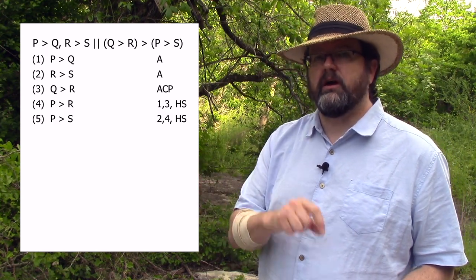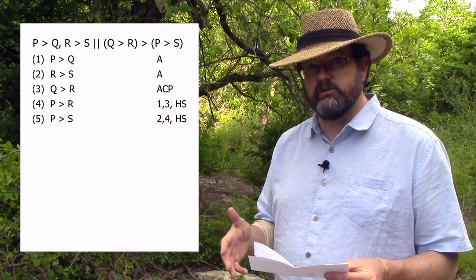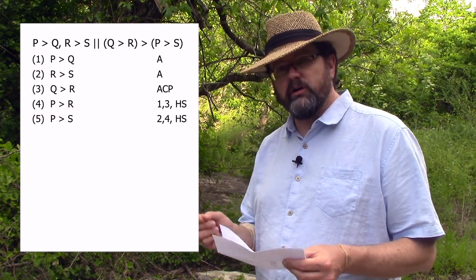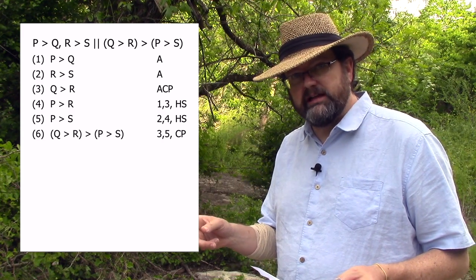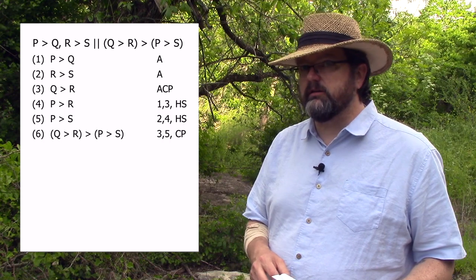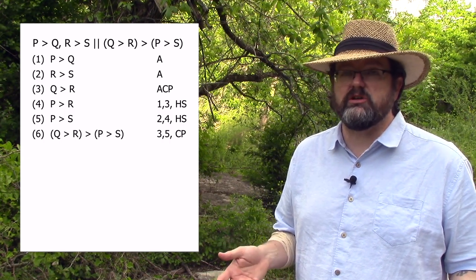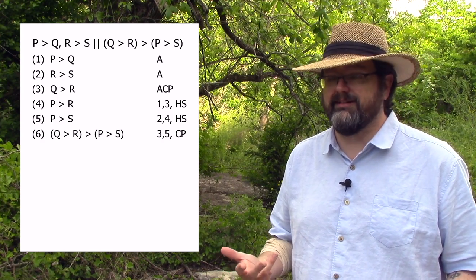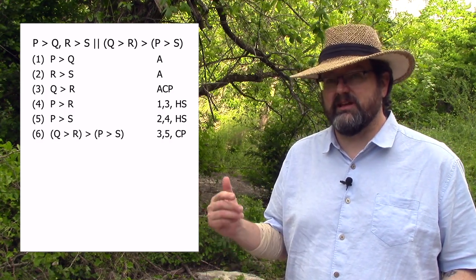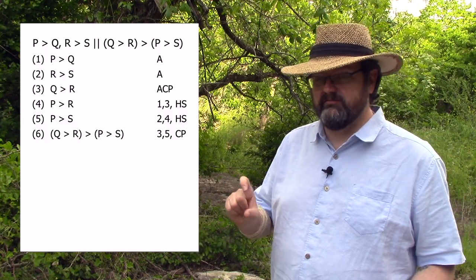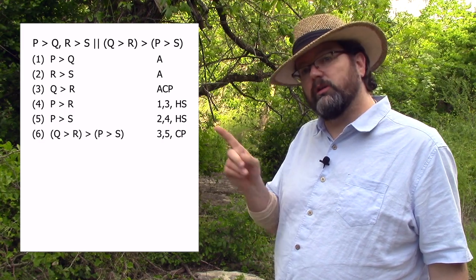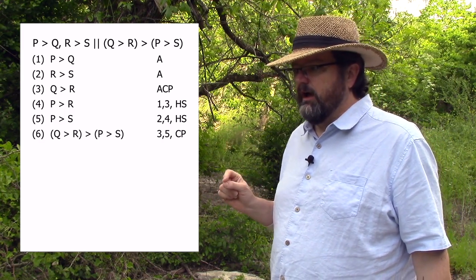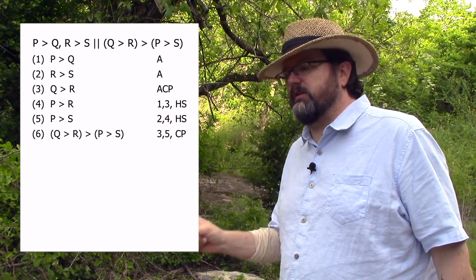We've reached the consequent 'if P then S' from the assumption of 'if Q then R.' We assumed the antecedent of the conclusion and inferred its consequent, so we conclude the conditional 'if Q then R, then if P then S.' Conditional proof looks a little weird — we think making assumptions is bad for logic, but it's not. You can make assumptions all the time; you just can't make assumptions as conclusions. The assumption has to be noted as a conditional. I can't just assume the conclusion and walk away — if I make an assumption, I need to be inferring a conditional.